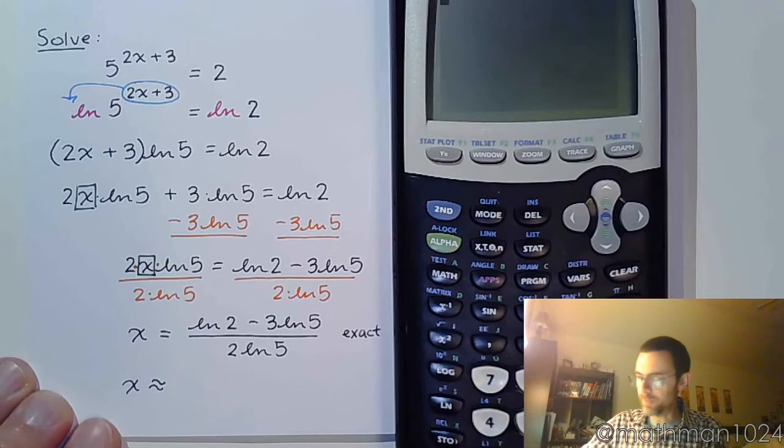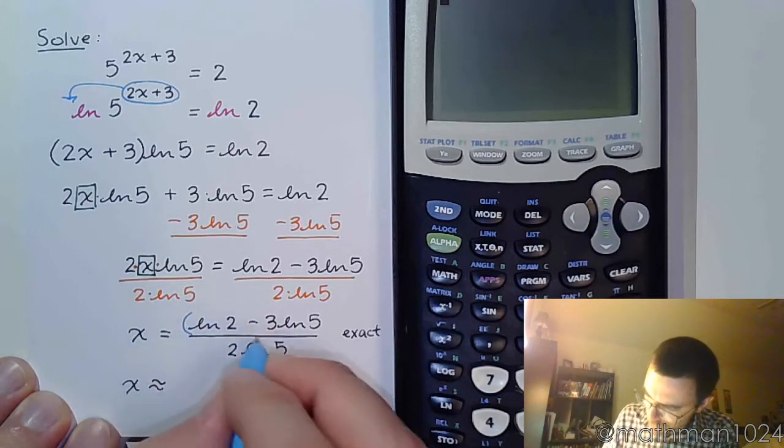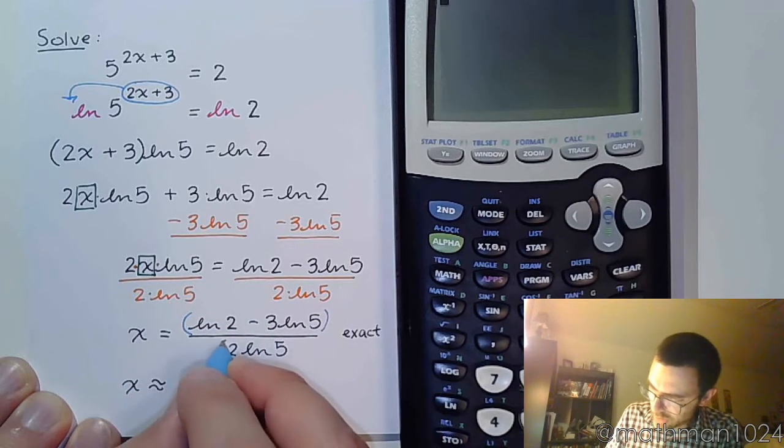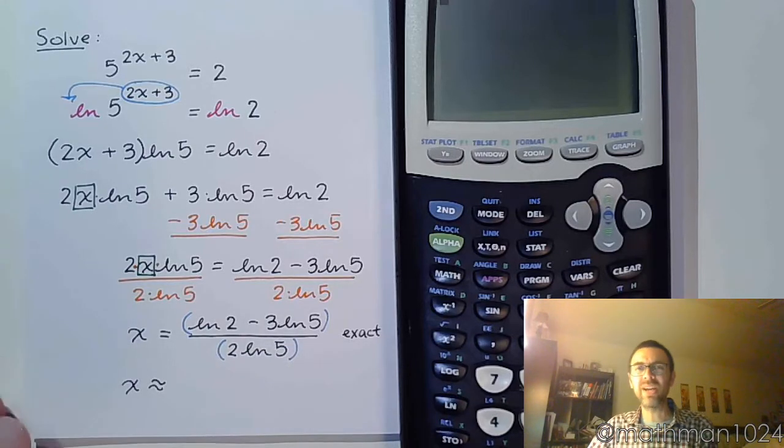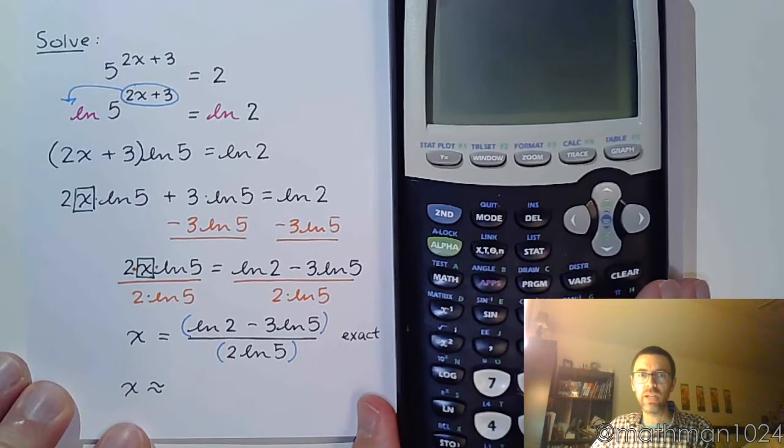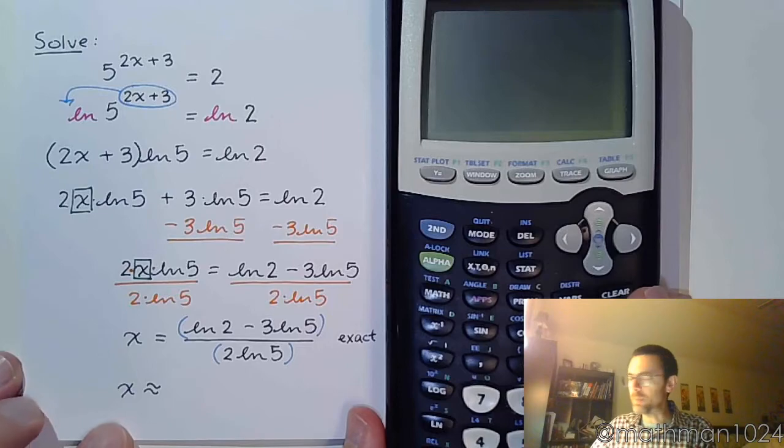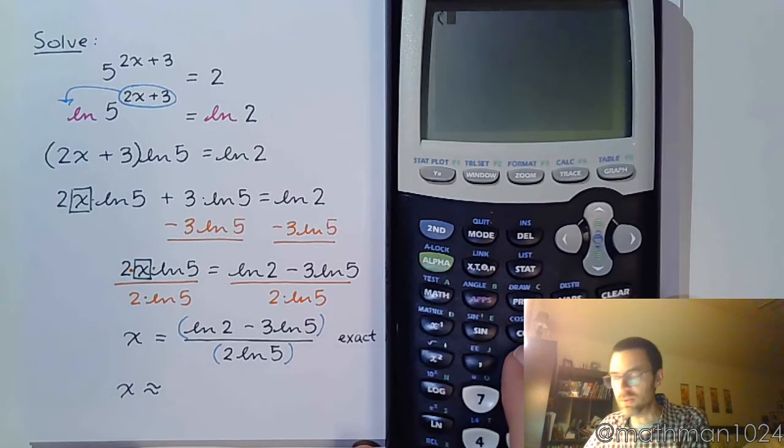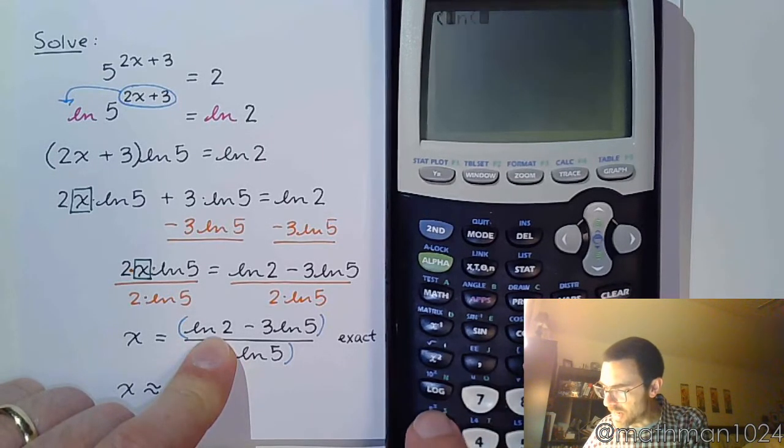Be mindful of one thing, though. Use parentheses for your numerator and for your denominator here, because it's not just a single logarithm. It's got more stuff to it. So open up parentheses, and let's type this in. So that's natural log of 2.